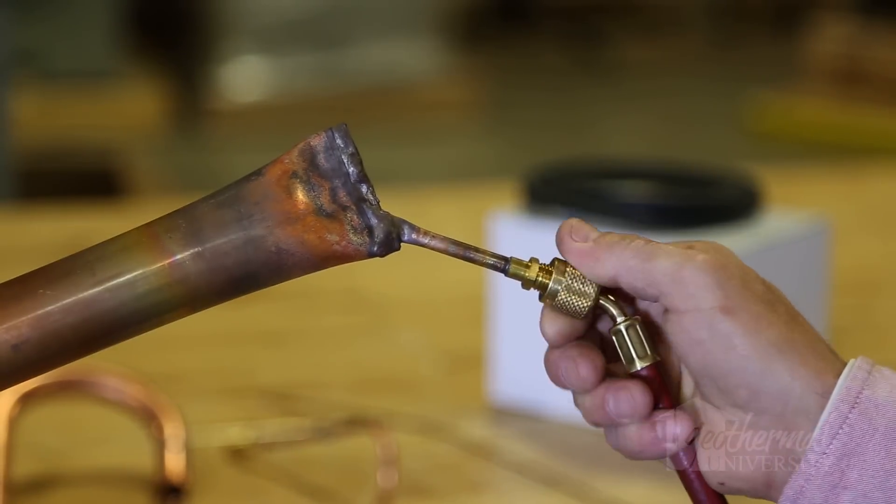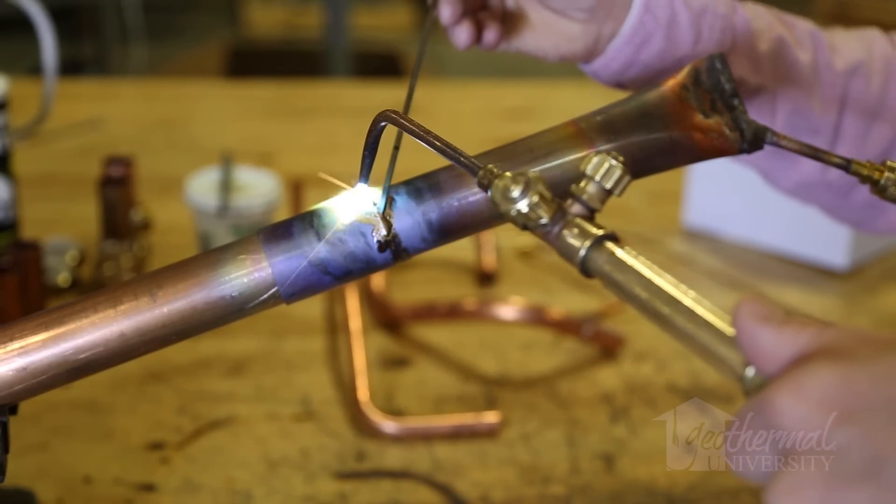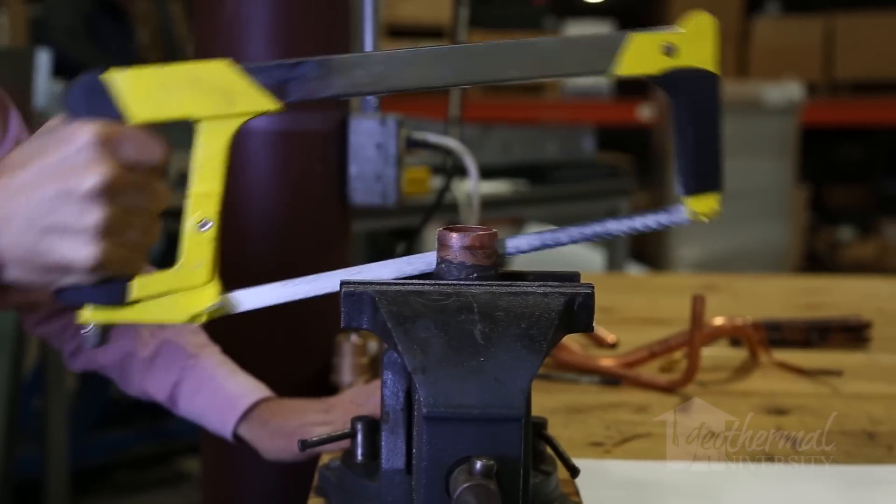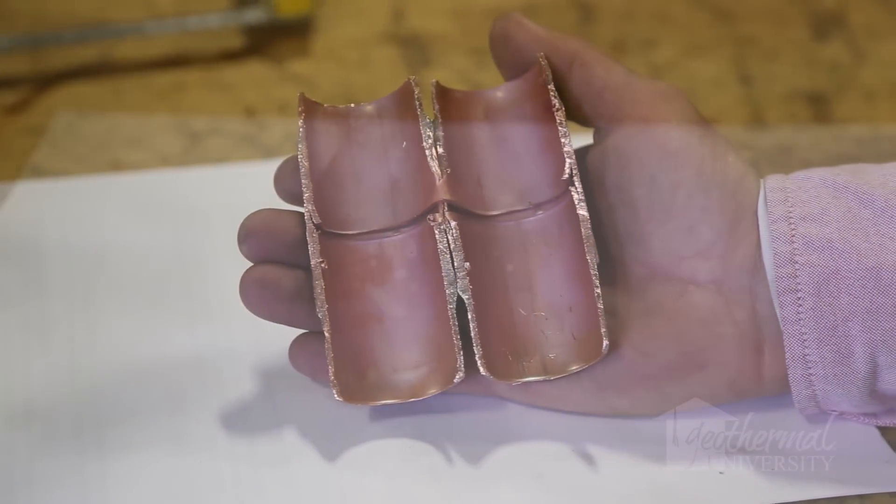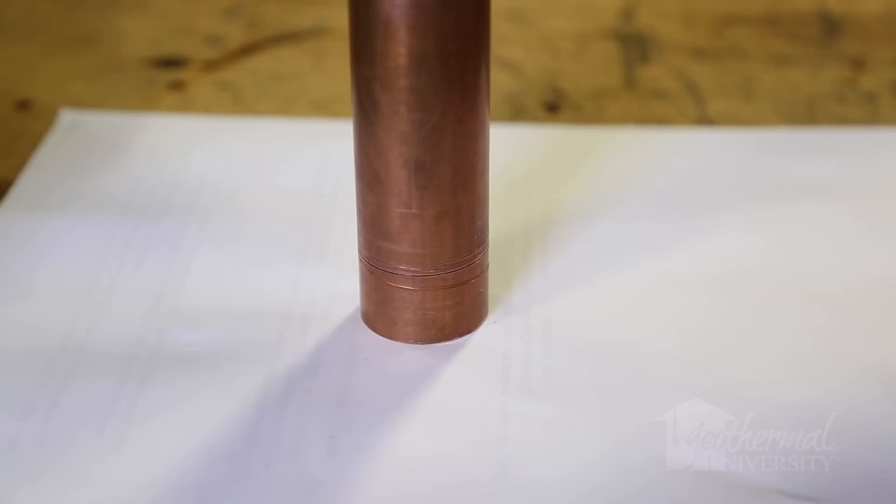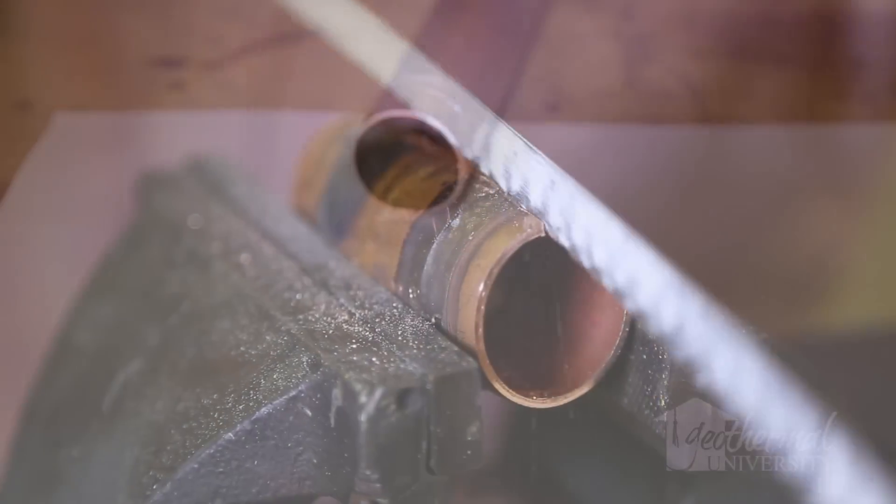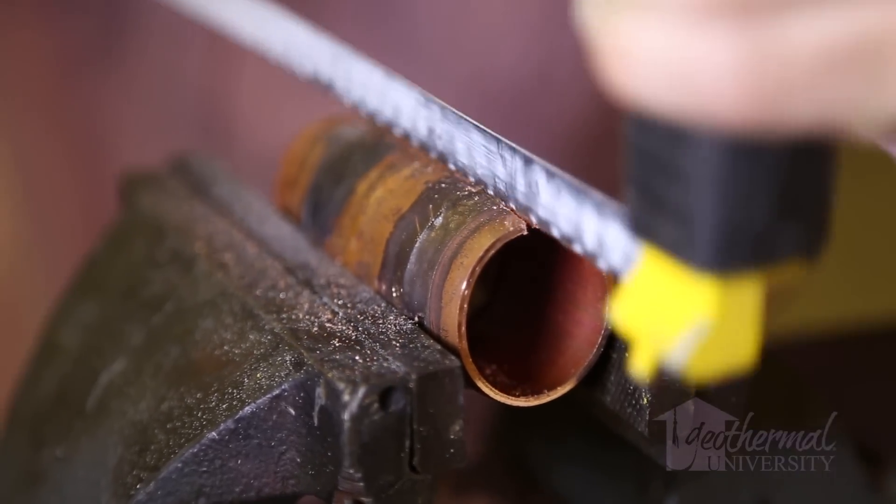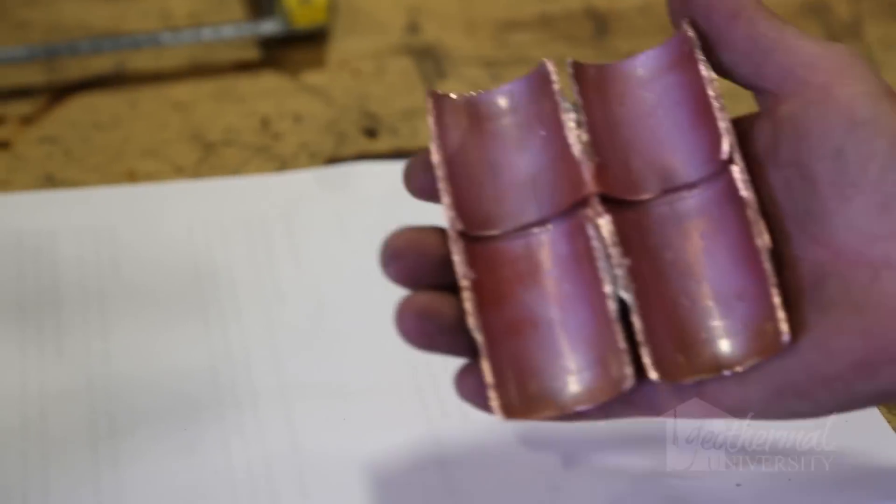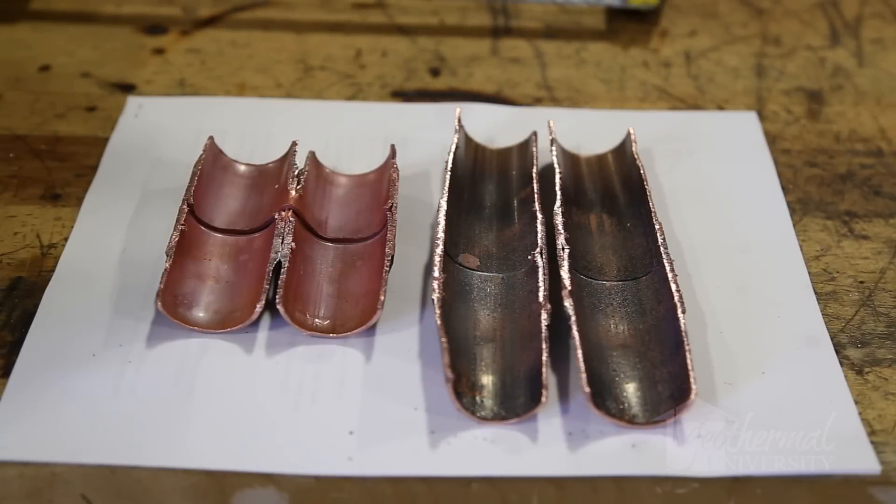In our second example, we are brazing while using a nitrogen purge. When the joint is cooled, we'll cross-cut the second example to reveal the inside of the tubing and compare. This time, you'll notice no scaling formed inside the tubing. When we cross-cut the joint, you'll see the copper tubing looks brand new on the inside. When we place the two cutaways together, the difference is very obvious.